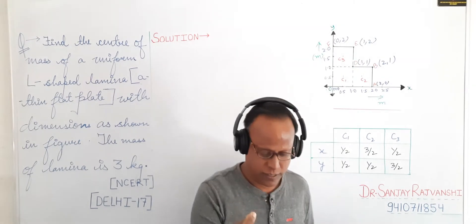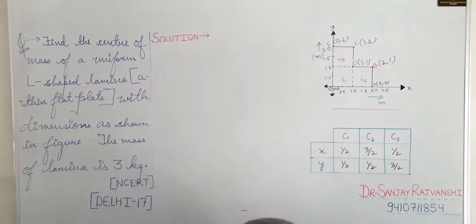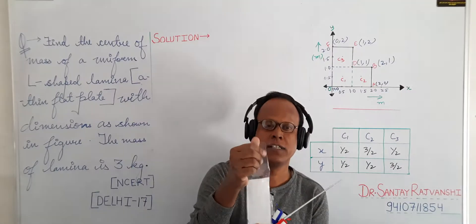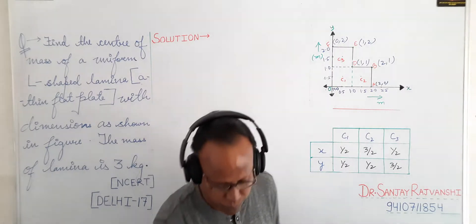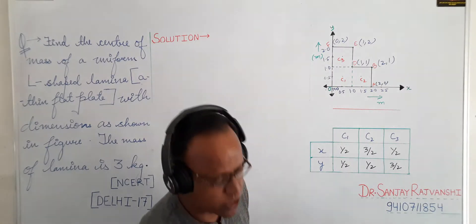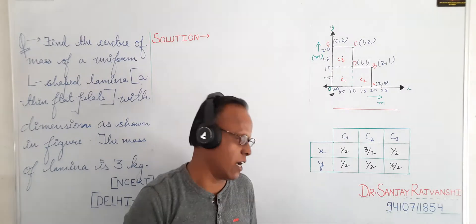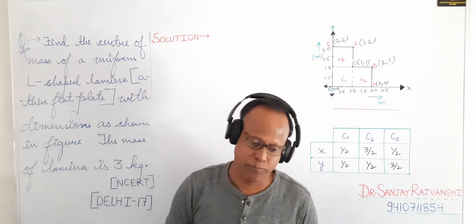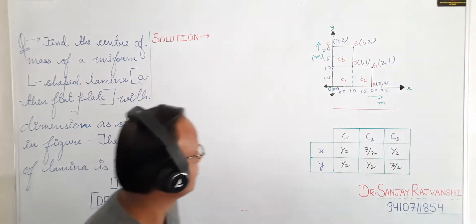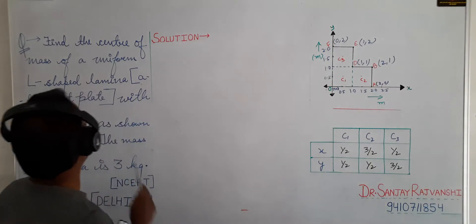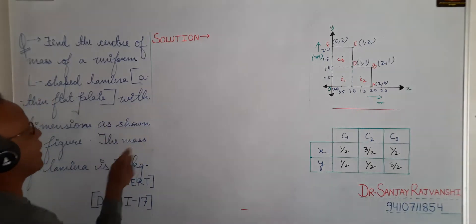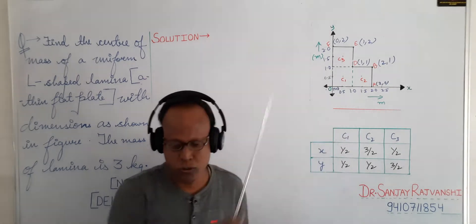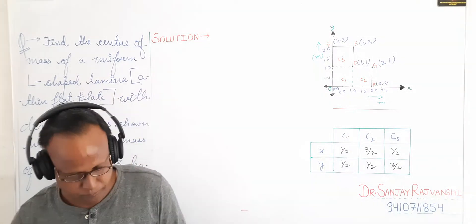Any thin flat plate like this thin one is known as lamina. If it is thick, then it is not called a plain lamina. So your aim is to find out the center of mass due to this system.